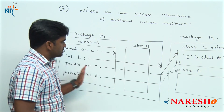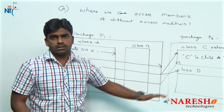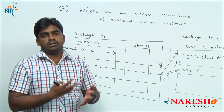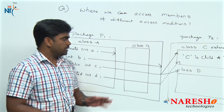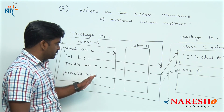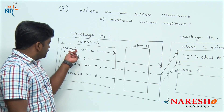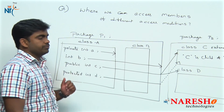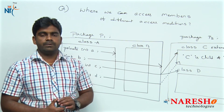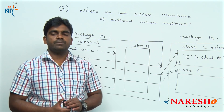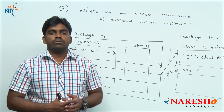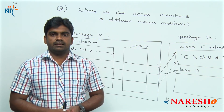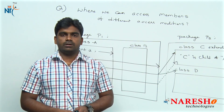So this is the accessibility of all the variables defined with different access modifiers. Hope you understood. For more videos, please subscribe to the Nourish IT channel. Thank you.